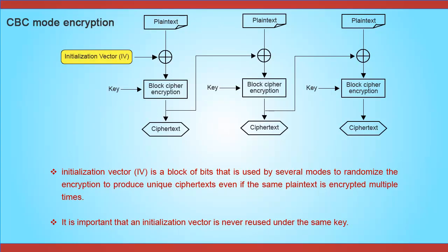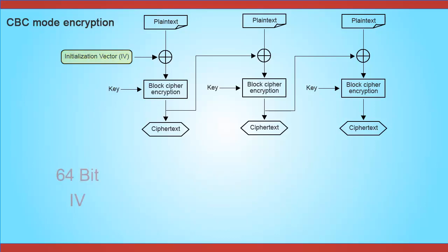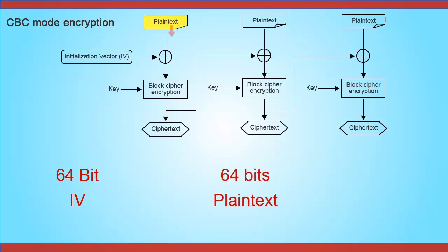An initialization vector is a block of bits used by several modes to randomize the encryption and produce unique ciphertexts, even if the same plaintext is encrypted multiple times. It is important that an initialization vector is never reused under the same key. A 64-bit initialization vector